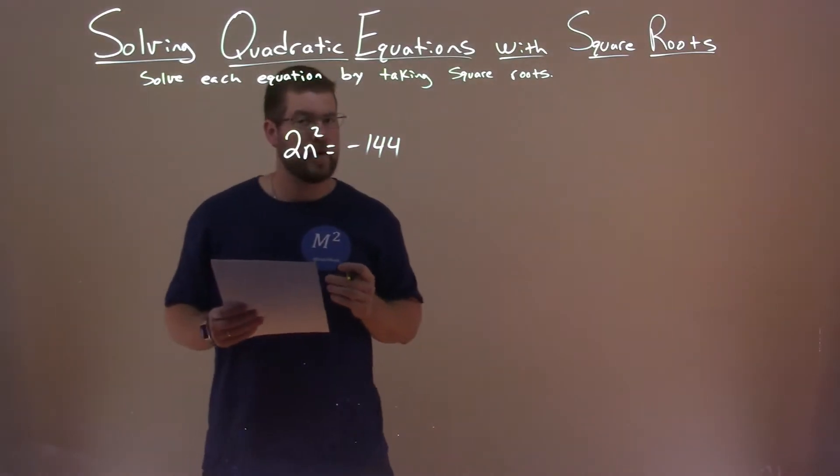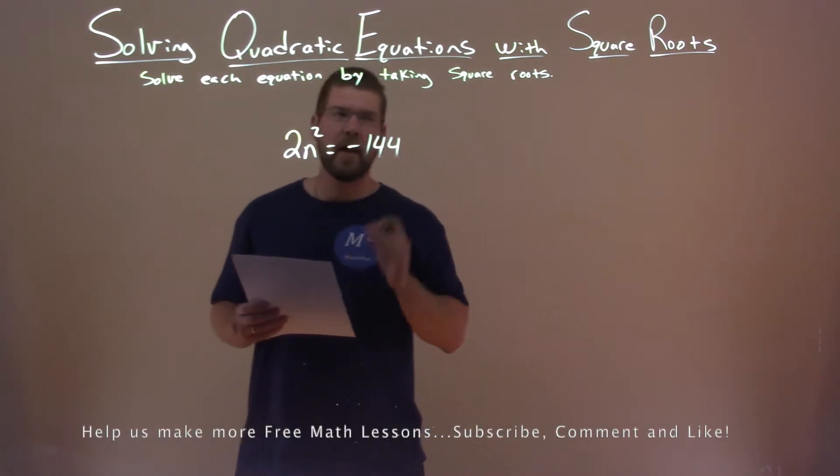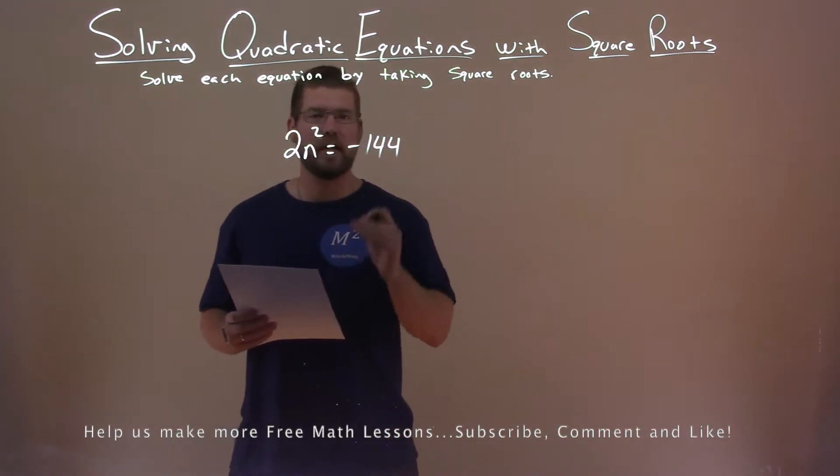We're given this problem right here. 2n squared equals negative 144 and we want to solve this equation by taking square roots.